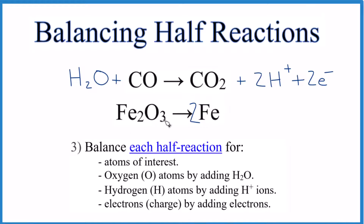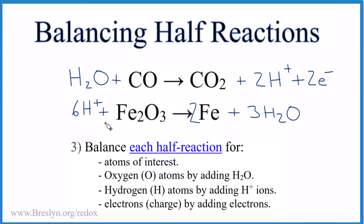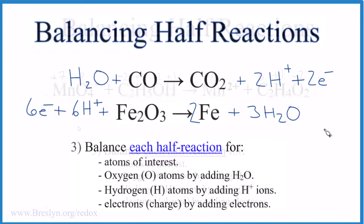For the second half reaction, we have three oxygen atoms, so add three water molecules. For hydrogen, we now have six hydrogens, so add six H+ ions over here. We have a six plus on this side and neutral on the other, so add six negative charges — six electrons. This half reaction is balanced.